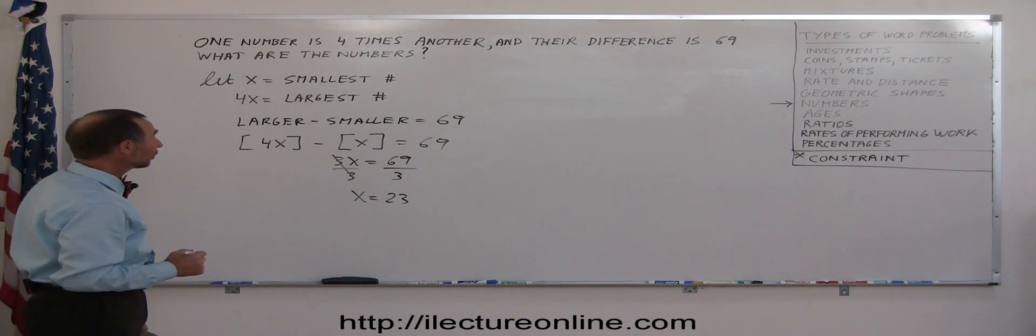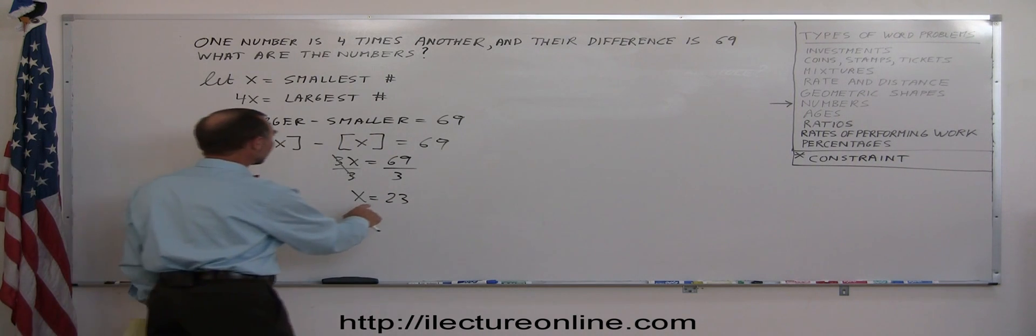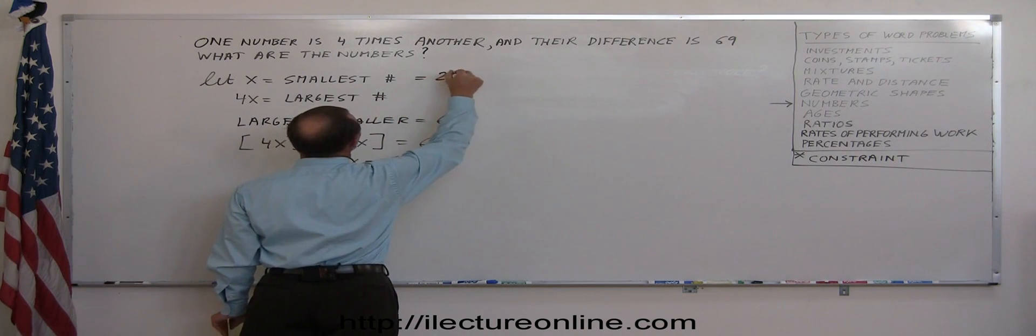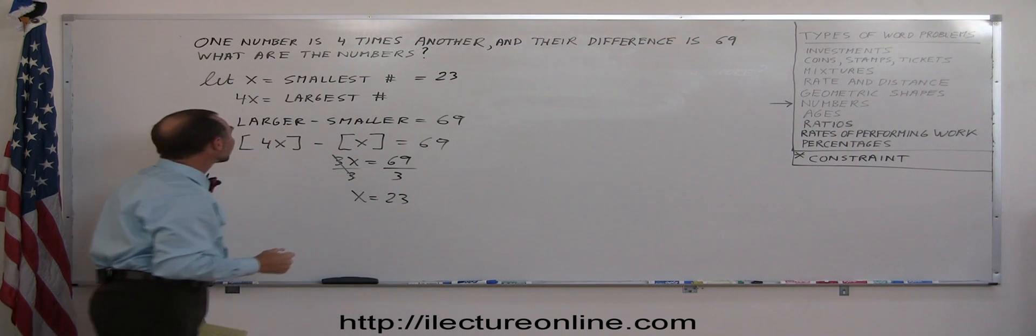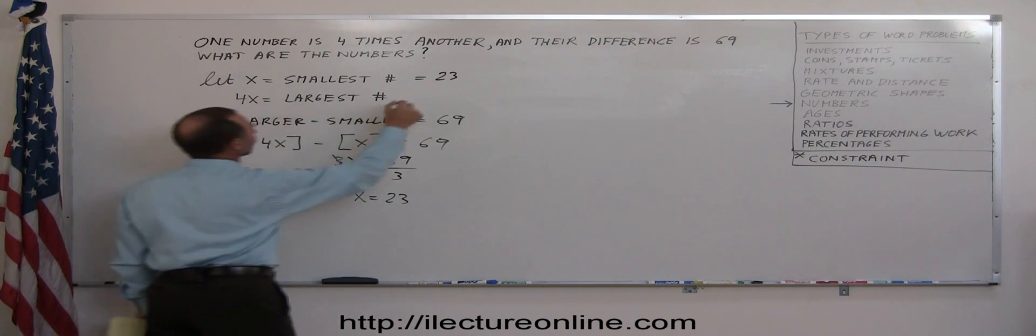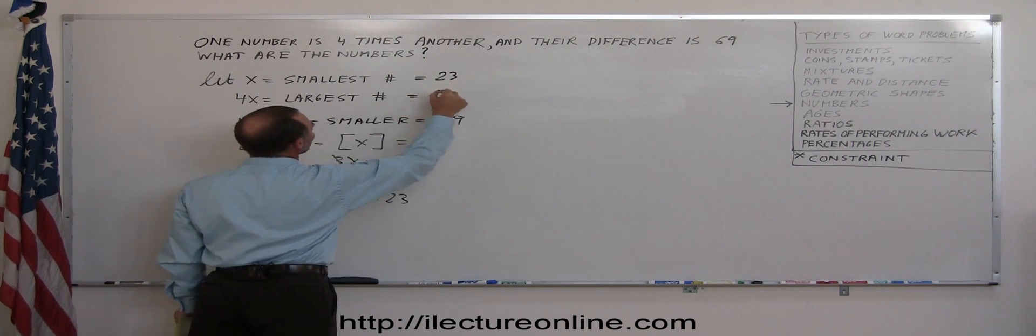Now just to make sure we did it correctly, so in this case, we think x is 23. And the larger of the two numbers is 4 times that, so 4 times 23 is 92.